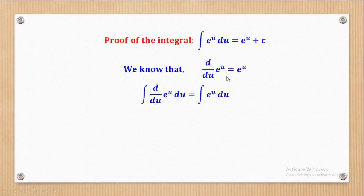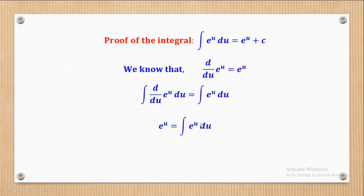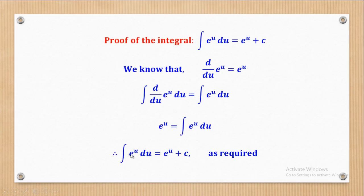We shall put integrals on both sides. Remember, integration is the reverse of differentiation, so the integral and derivative cancel to remain with e^u alone. We get e^u equal to the integral of e^u with respect to u. Therefore, the integral of e^u with respect to u equals e^u plus the constant of integration. That is the proof of this expression.